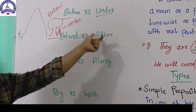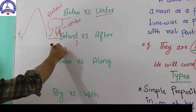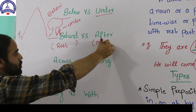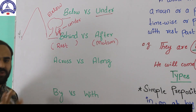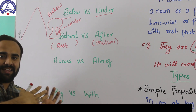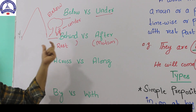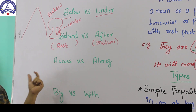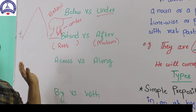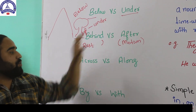Behind versus after — 'behind' is used when we are talking about rest position, and 'after' is used when we are talking about motion. For example, 'a boy is standing behind the door' — the boy is at rest, so we use 'behind'. But 'the dog was running after the thief' — the dog is in motion, so we use 'after'.